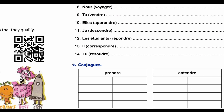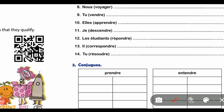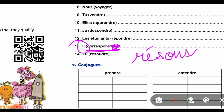Then part number 13, 'correspondre' with subject pronoun 'il' - इसकी conjugation में directly R-E cut हो जाएगा, and 'il/elle' के case में ending खाली रहती है, so as it is। वैसे ही 'résoudre' verb, which means to solve, इसको 'tu' के साथ conjugate करना है तो conjugation होगी R-E-S-O-U-S।